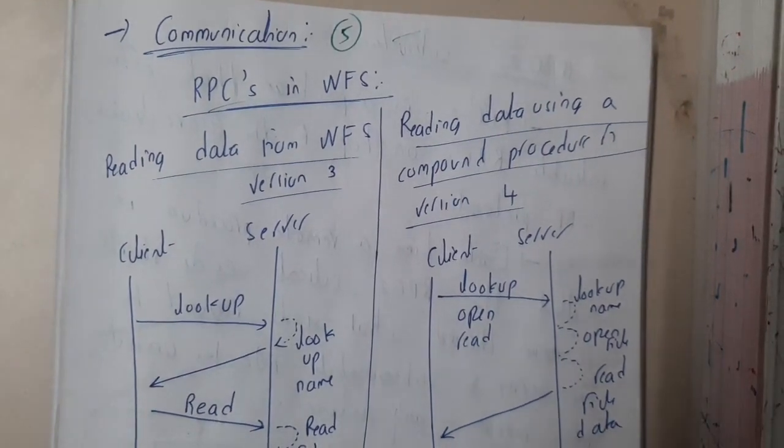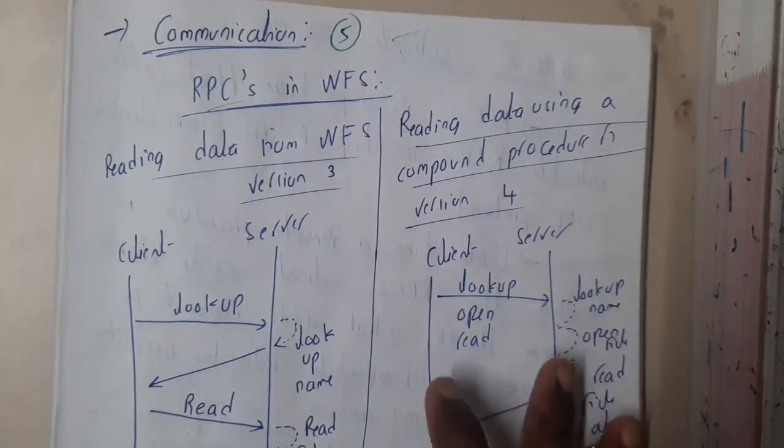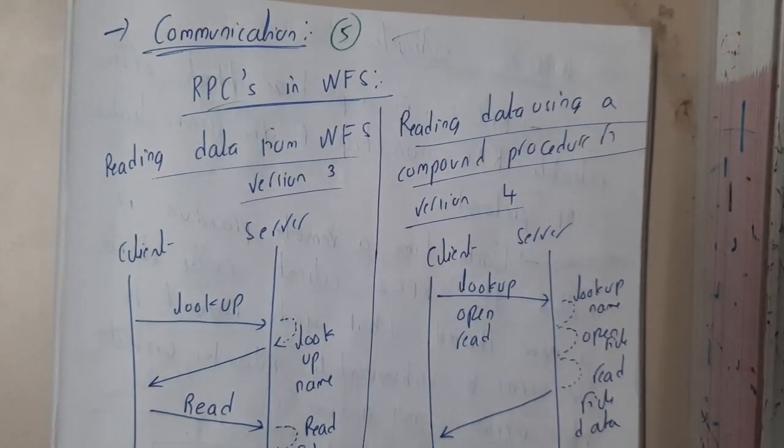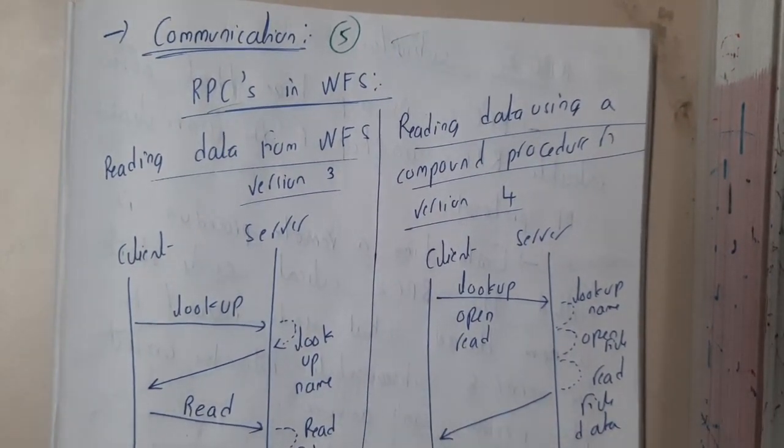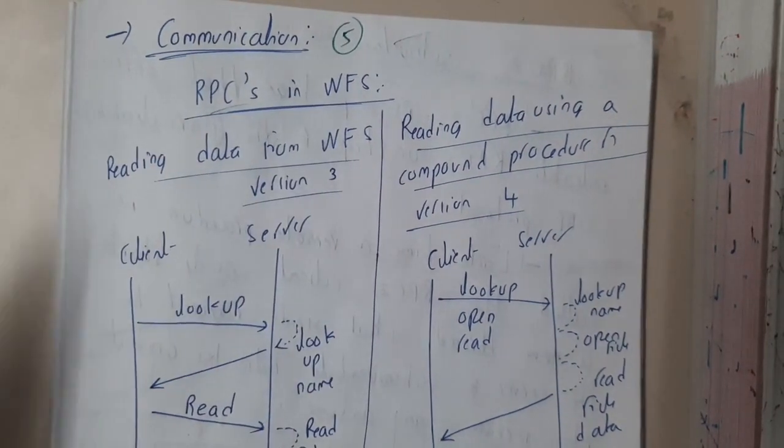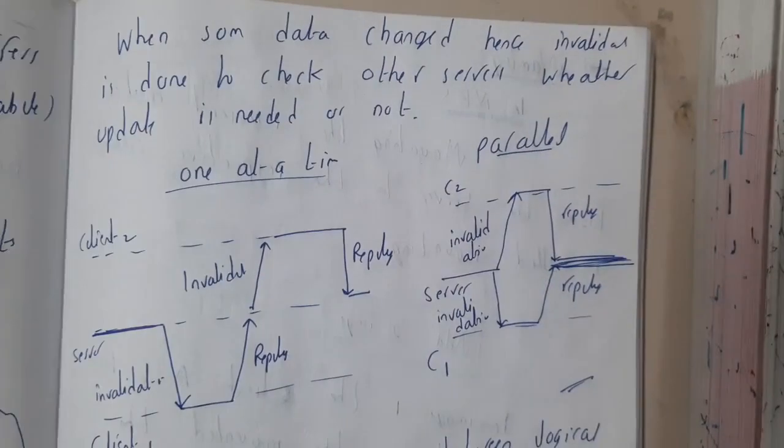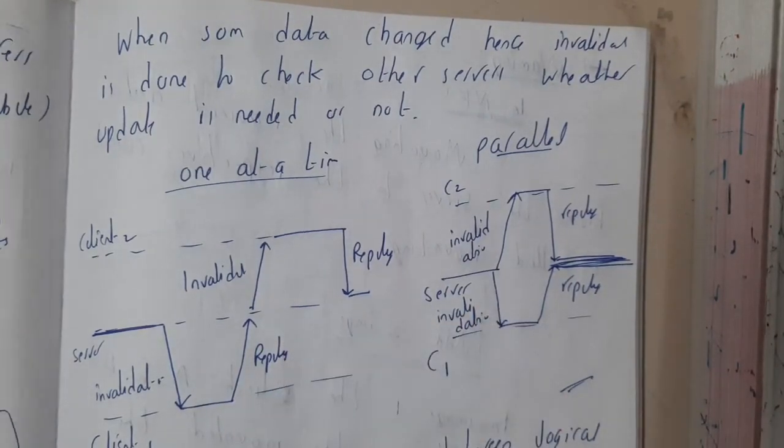Hello guys, we are back with our next lecture. In this lecture let us go through the communication in distributed file system. In distributed file system or network file system we are having two major protocols, those are remote procedure call and remote procedure call two subsystems.